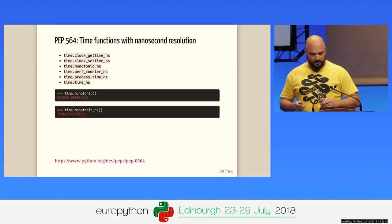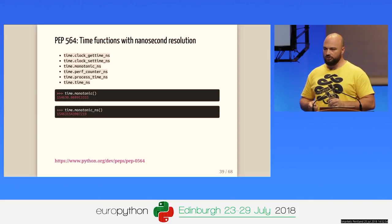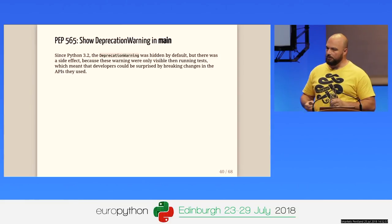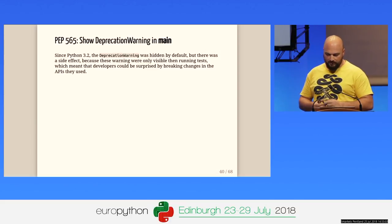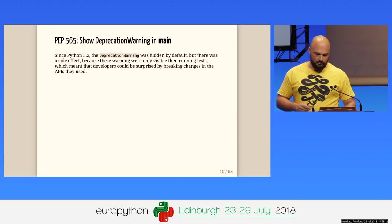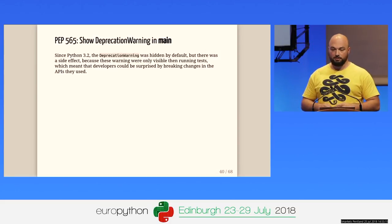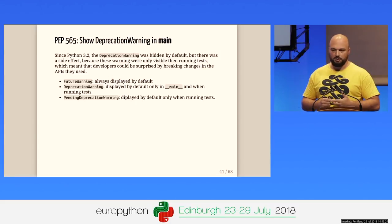The next point is about the deprecation warning. When we have an exception, we can raise a deprecation warning. There was a problem since version 3.2: by default, the deprecation warning was hidden. With the new version Python 3.7, we will show the deprecation warning in the main namespace. And for future warnings and pending deprecation warnings, we will show them in tests.